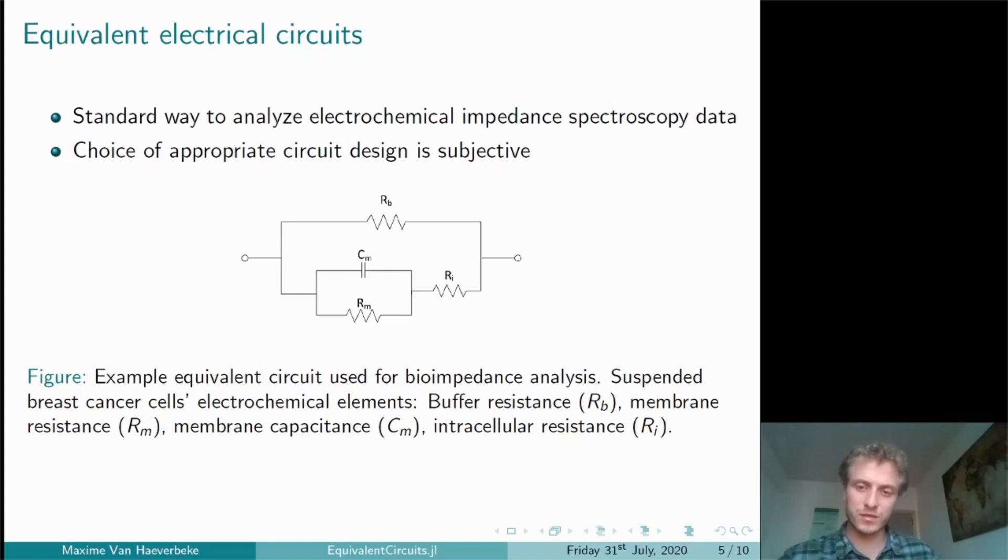This decision is, however, subjective and several different proposed circuit configurations yield similar results. The EquivalentCircuits.jl package replaces this requirement for an expert decision by an optimization algorithm called genetic programming.